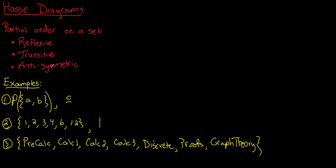In this video I'm going to talk about Hasse diagrams. A partial order on a set has to satisfy three properties: it's a relation that's reflexive, transitive, and antisymmetric. Let's take a look at three examples so we can understand what these terms mean, and then we can draw the Hasse diagram to see what is so important about those diagrams.